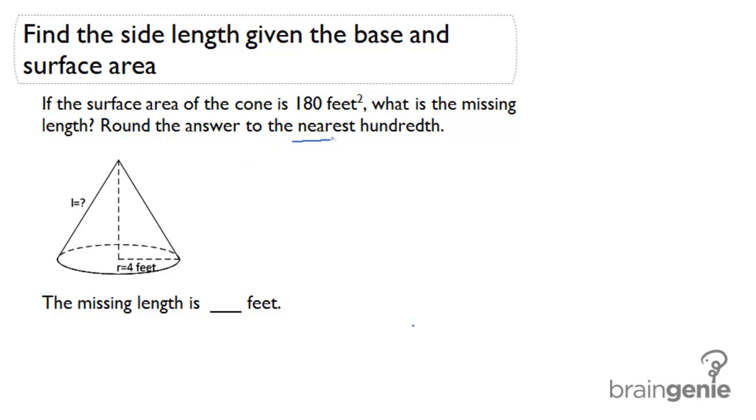I'm going to underline nearest hundredth because that's very important to us. So let's take a look at the picture. We have the radius of the cone to be 4 feet and L, the slant height or the height of the side of the cone is missing. So that's the missing measurement we're going to find.